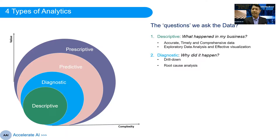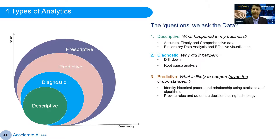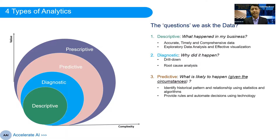All of descriptive and diagnostic analytics focuses on the past — something that has already happened. Predictive analytics takes it a step further and tries to answer: what is likely to happen in the future given certain circumstances? There will be uncertainties, but we assume certain conditions and try to predict outcomes. We identify historical patterns and relationships using statistics and algorithms, then use the resulting rules to automate certain decisions using technology. Predictive analytics becomes more complex, but this is where the value also increases for the business.